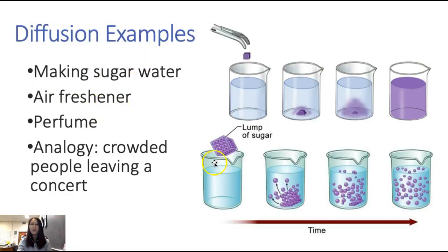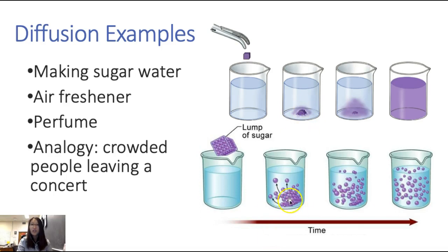If you look right here, there are two more pictures showing you: if you put a chunk of sugar or food coloring in water, you can see that it moves from an area of high concentration of sugar to low concentration of sugar. But water will move from high concentration of water to low concentration of water, which means for the sugar movement and the water movement, they're in opposite directions.